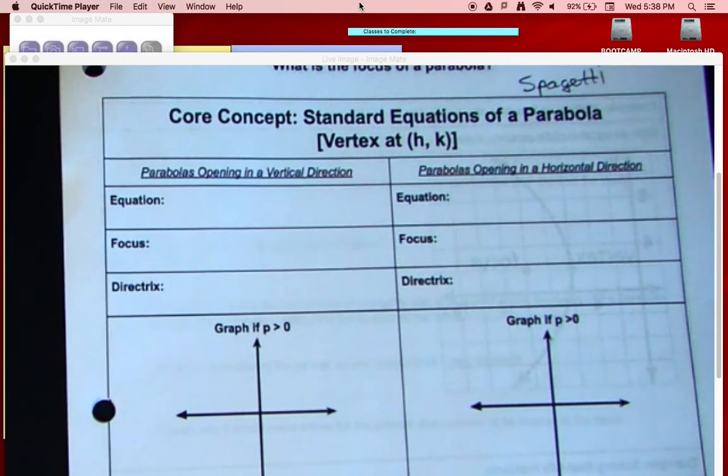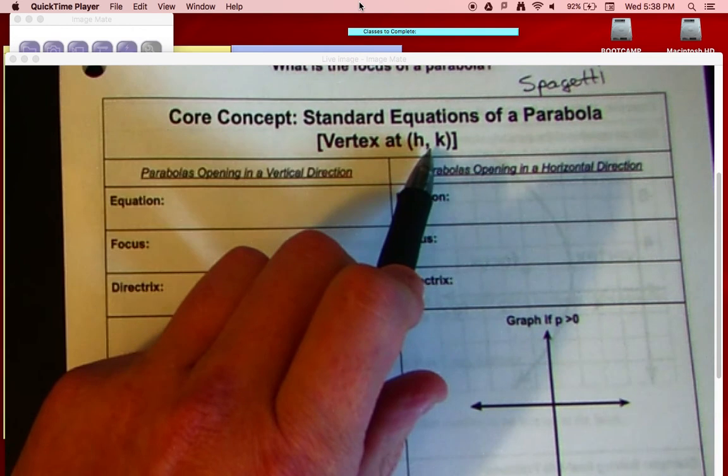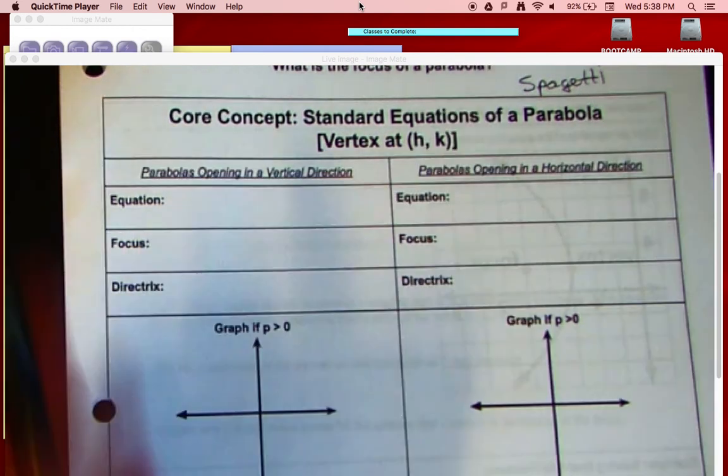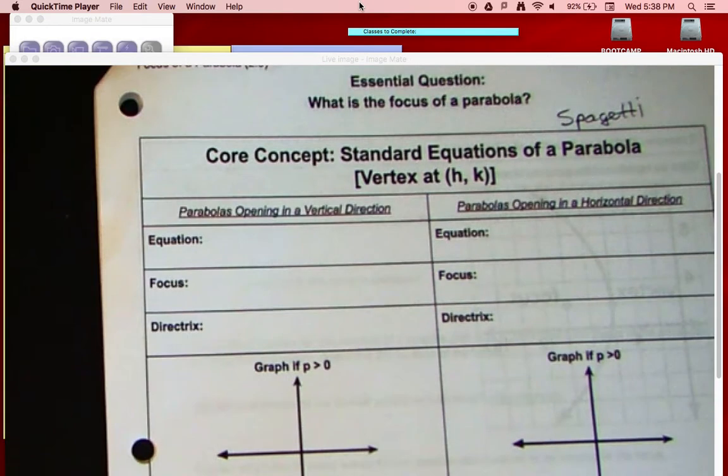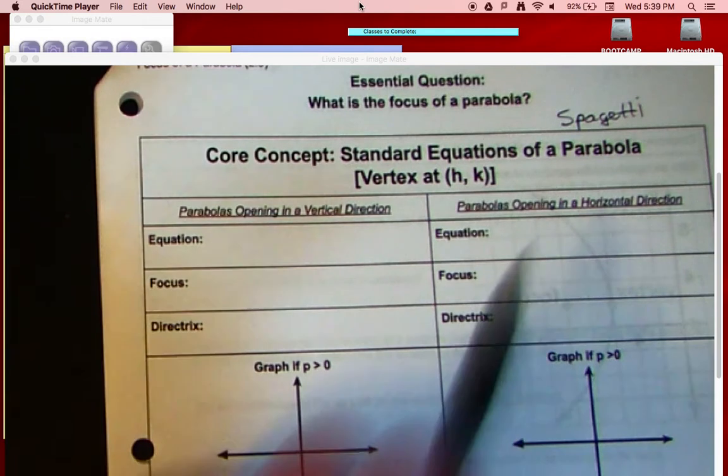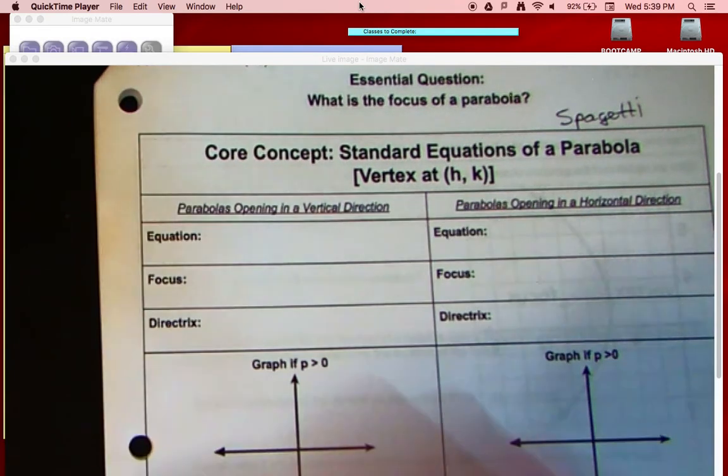So we've been talking about standard equations of a parabola, what they look like when they are on the origin, but now we're going to look at what happens when we move them off the origin. We're going to have our vertex at h comma k, which is the typical coordinates that we use for our vertex. We've got parabolas that open in the vertical direction, parabolas once again that open in the horizontal direction.